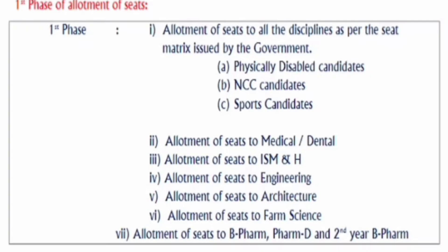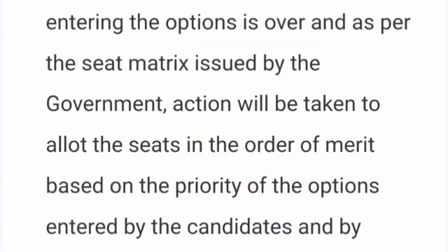The allotment happens in this order: first to physically disabled candidates, then NCC candidates, then sports candidates, and then it proceeds through medical, dental, ISMH, engineering, architecture, farm sciences, and lastly B.Pharma and others. Let's look at the detailed version of this process.